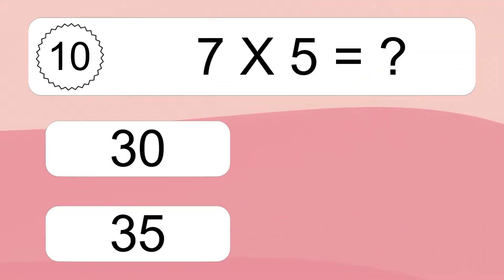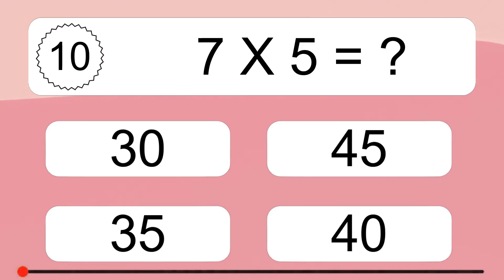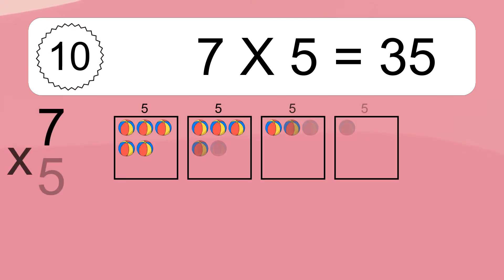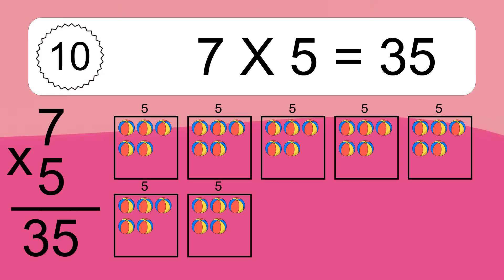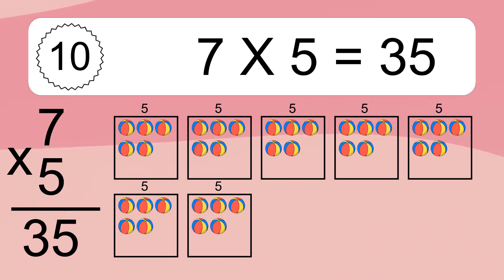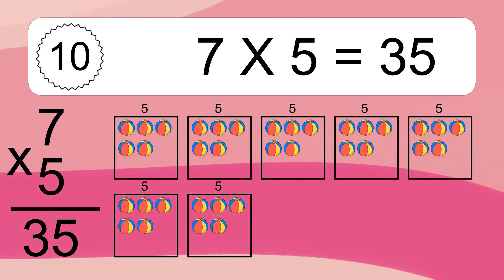7 times 5 equals what? 7 times 5 equals 35. We have 7 boxes, and each box has 5 colorful balls inside. If you count all the balls in all the boxes together, you will have 7 times 5 balls. This equals 35 balls.